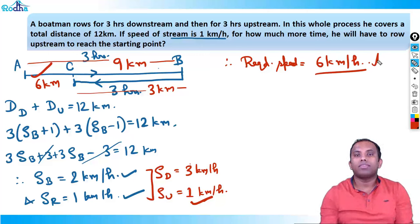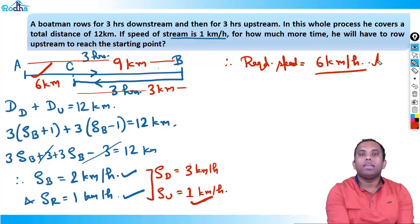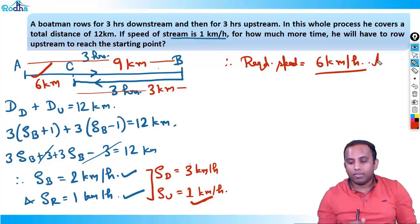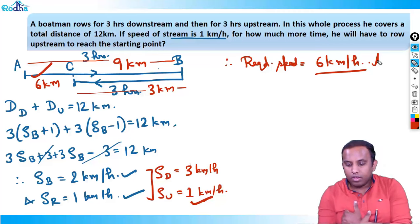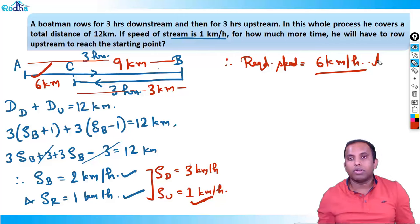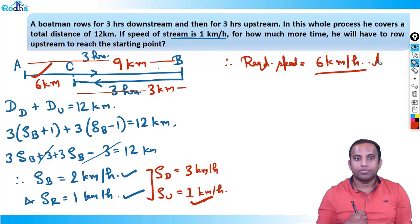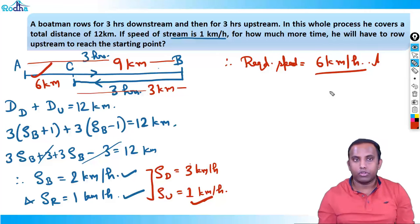So what is the answer? The required time is 6 km divided by 1 km per hour, which is 6 hours. The answer is 6 hours. Now move to the next question.